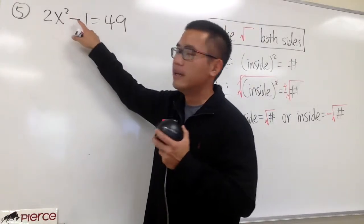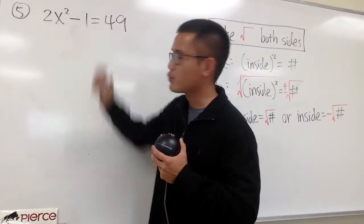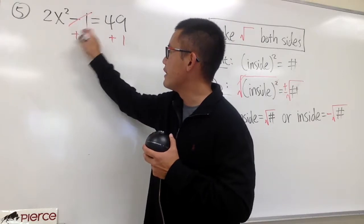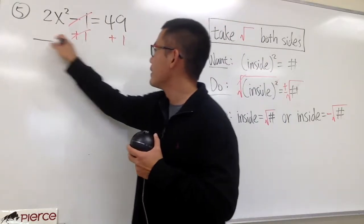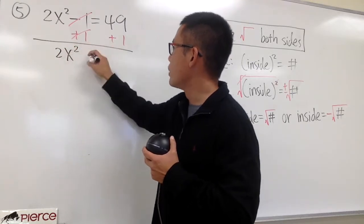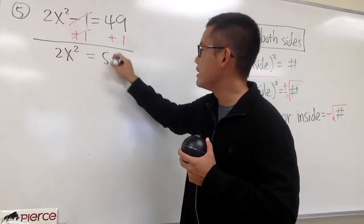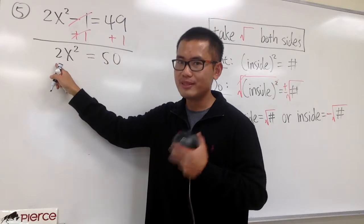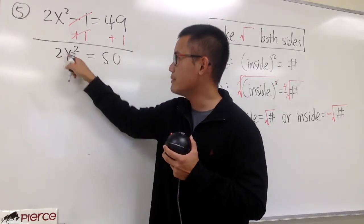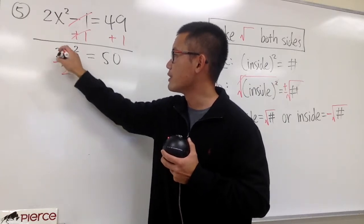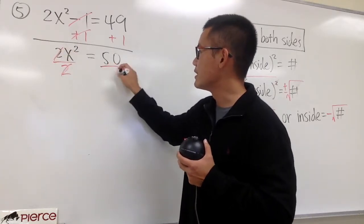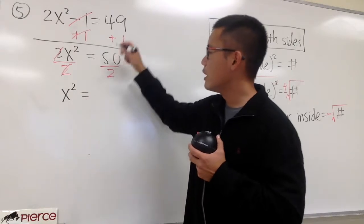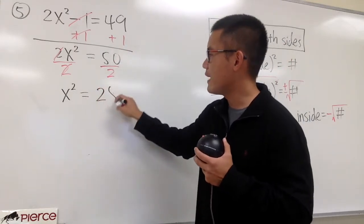Because we have 2x squared and then minus 1, we have to get rid of the minus 1 first. We can just add 1 on both sides so that this and that will be canceled. Then we will have 2x squared equal to 49 plus 1, that's 50. Now this is 2 times x squared, so we have to get rid of this 2 by dividing by 2 on both sides, so this and that will cancel. We get x squared equals 50 over 2, and that's 25.